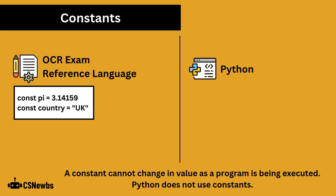A constant cannot change in value as a program is being executed. Python does not use constants. The const command denotes a constant that is being used in OCR ERL. For Python, you could use a variable to act like a constant and just not change it.